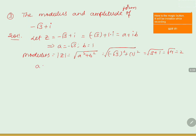Now by seeing the values of a and b: a is negative, that is less than 0, whereas b is positive, which is greater than 0. Then we can say that theta belongs to the second quadrant, as a is less than 0 and b is greater than 0.